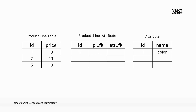So it generates a third column called attribute foreign key, and that's a reference to attribute number one. What we end up with is a new table that links the data from the product line table — in this case, product line ID1 — with the attribute table — in this case, attribute ID1, color. So I can now query the product and ask for all of the attributes associated with product line number one. It will inspect the product line attribute table, identify any attributes it's associated to where the product foreign key is number one, and then grab all the attributes associated to that product line.